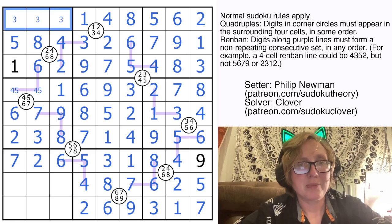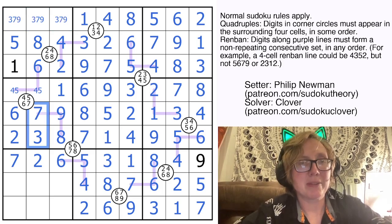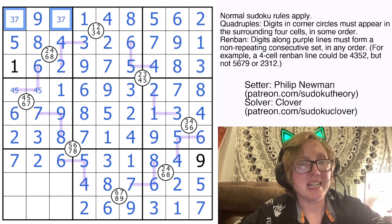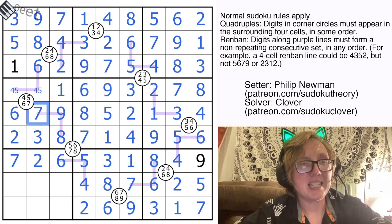So in row 1 now, we have 3, 7, and 9. We have 3 and 7 there, so that's going to be a naked 9. A 3 and a 7.